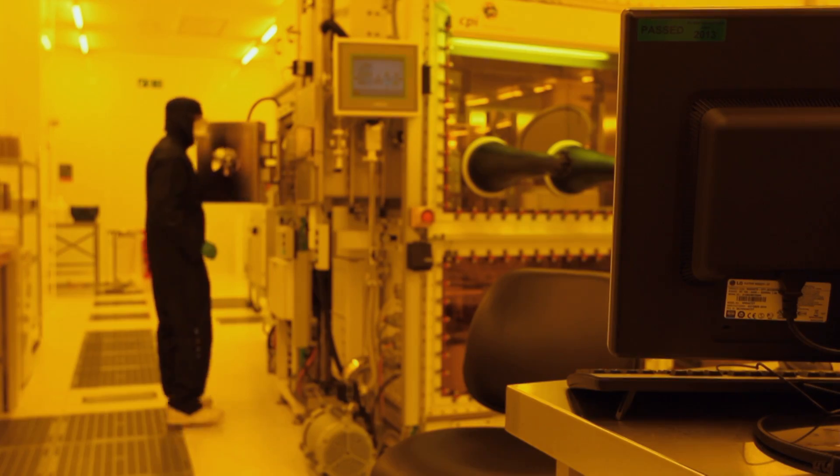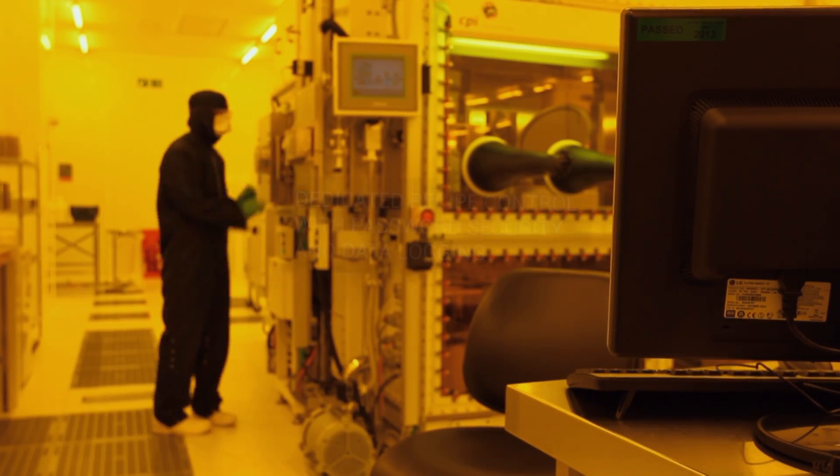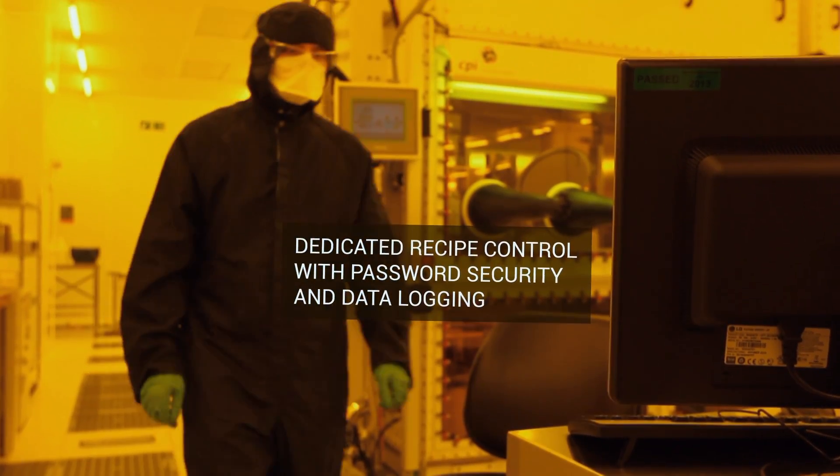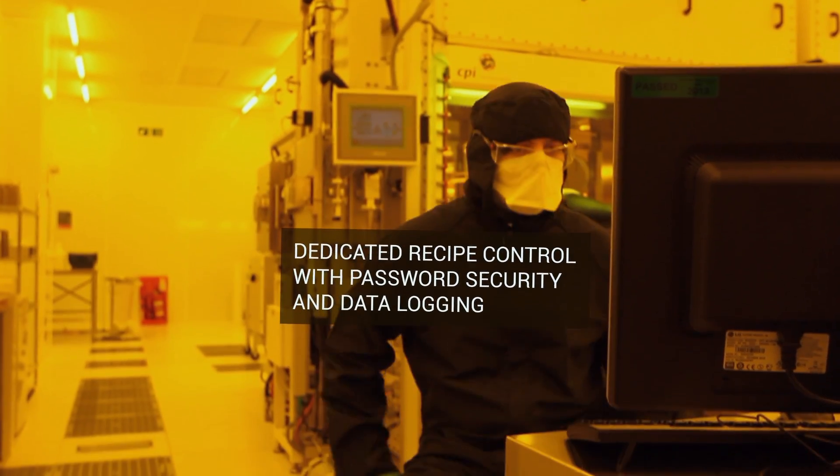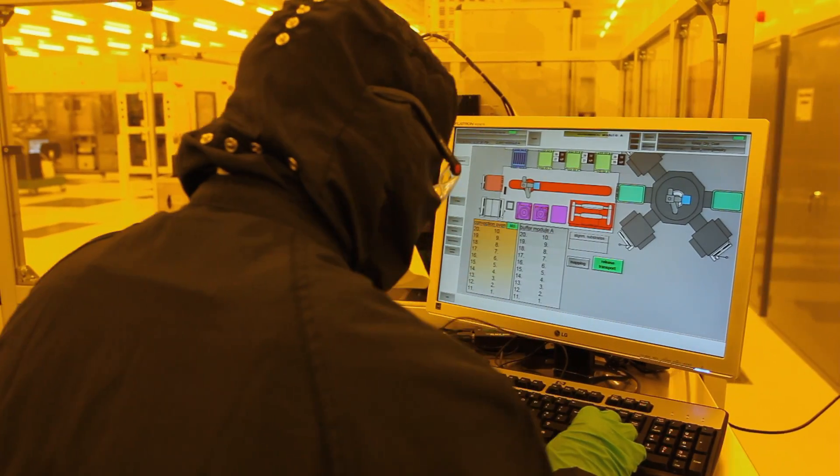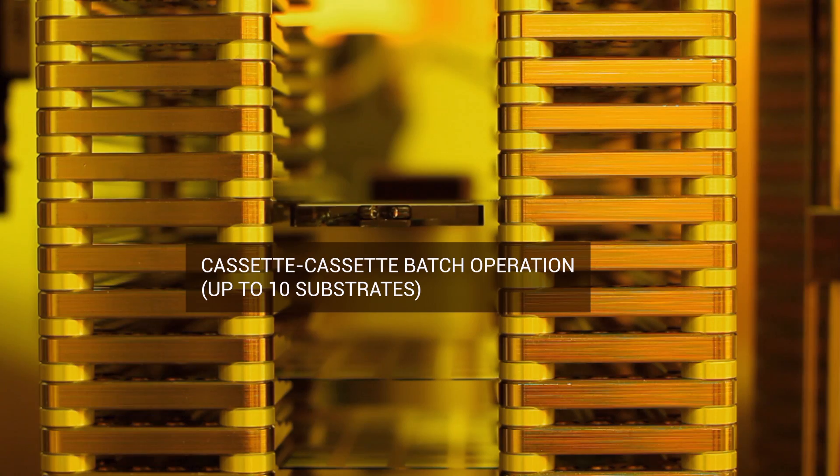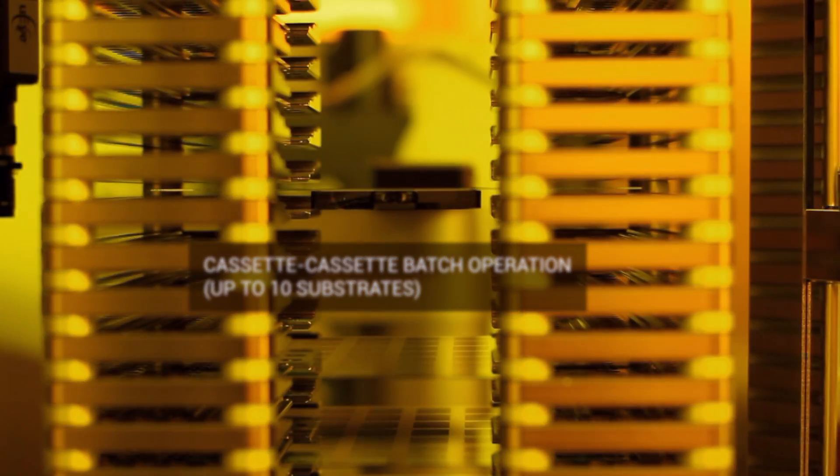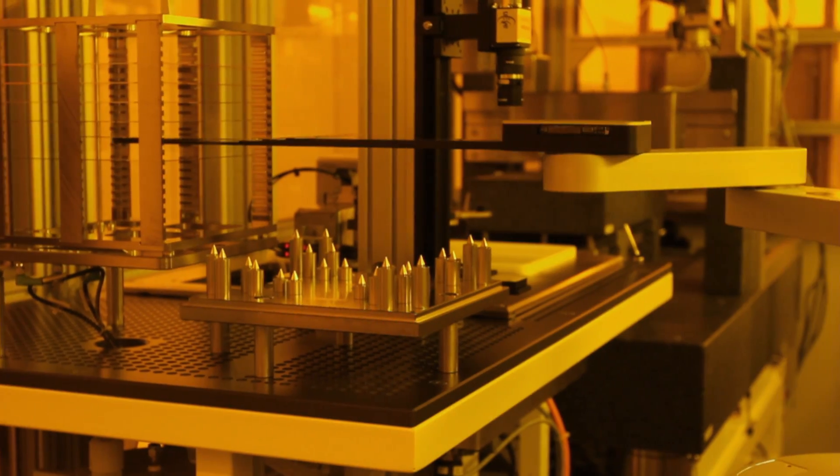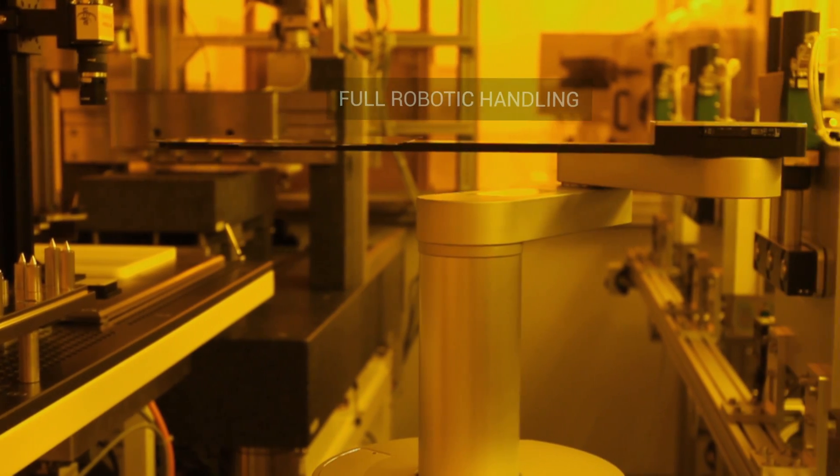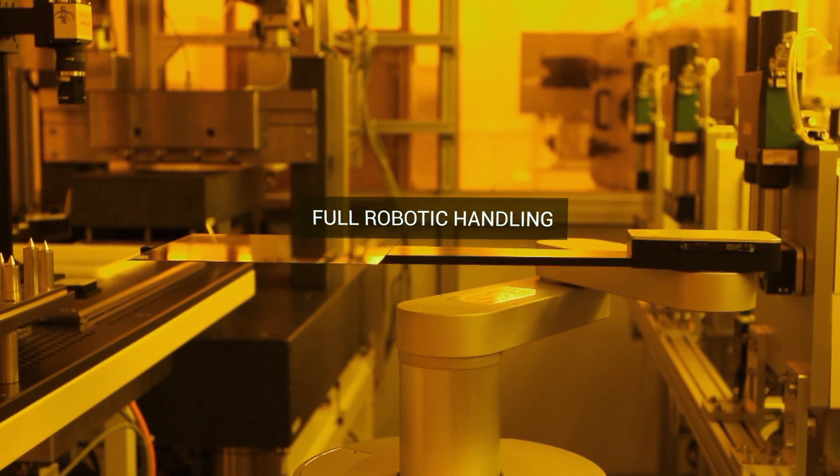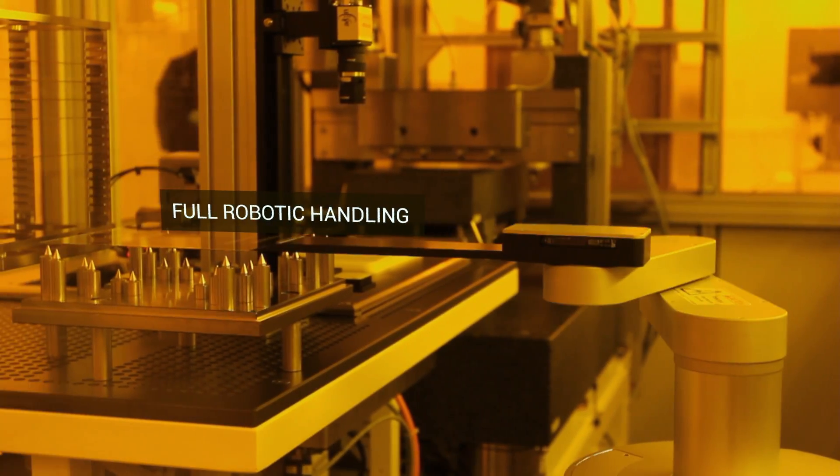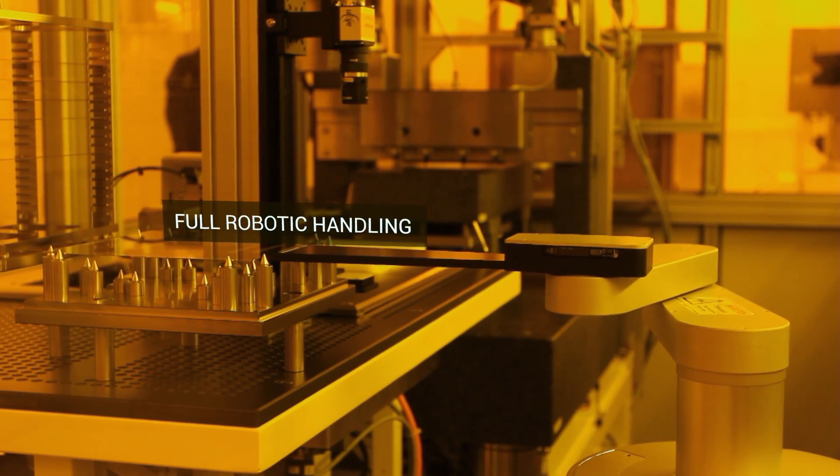The process commences by positioning the substrate cassette in the convection oven chamber. The chamber bakes the substrates, removing all traces of moisture. Dedicated recipe control and full-system data logging allows the user unique system traceability. Substrates are transferred under fully automated robotic control, eliminating manual handling and maximising process yield and repeatability.